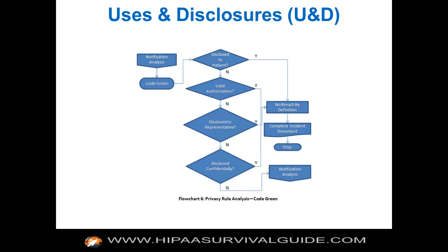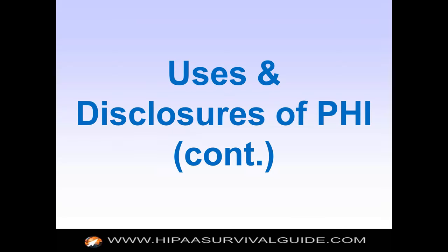Your methodology for determining whether or not the privacy rule was violated: walk through 164.502. Was it disclosure to the patient? That's okay — you can disclose PHI to a patient. Was it via valid authorization? Was it to a representative? Was it to another covered entity? That's the methodology you need to use every time you're trying to determine whether the privacy rule had been violated — and that's the first part of the breach analytical framework, showing how the breach notification rule and the privacy rule are interrelated and interdependent.